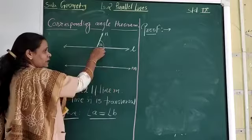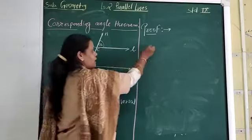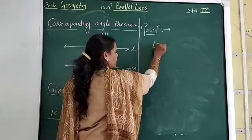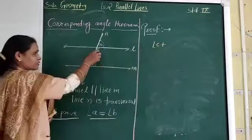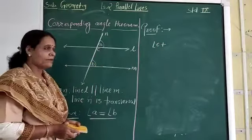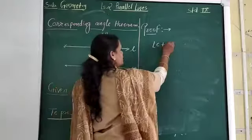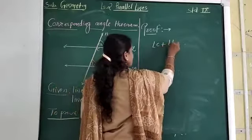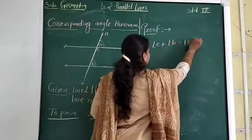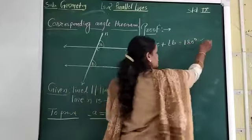So we can see angles C and B. Angles C and B are forming the interior angles and we know that interior angles are supplementary. So angle C plus angle B is equal to 180 degrees because they are which angles?